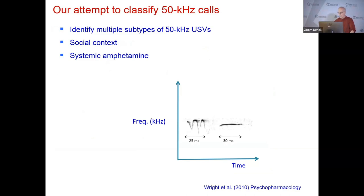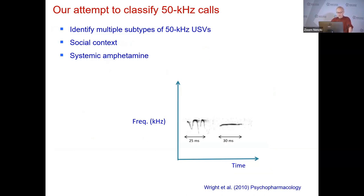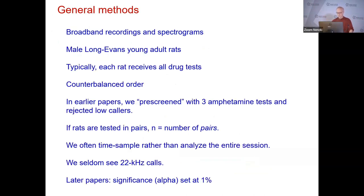When we got into the game with our first paper in 2010, we were interested in seeing if we could classify these 50 kHz calls, because just reading the literature and looking at figures, it was clear there seemed to be different types of calls. So we collected about 20,000 calls and subtyped them all. This was work by Jen Wright. She looked at rats tested singly versus in pairs, and the effect of amphetamine acutely on calling. This general methods section applies to pretty much everything I'm going to say today. We use the Avisoft equipment, and we've only looked at male adult rats so far.